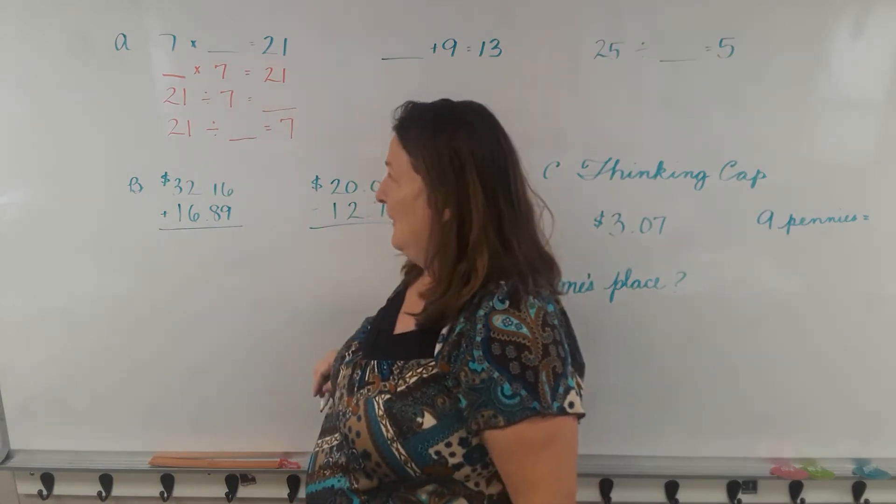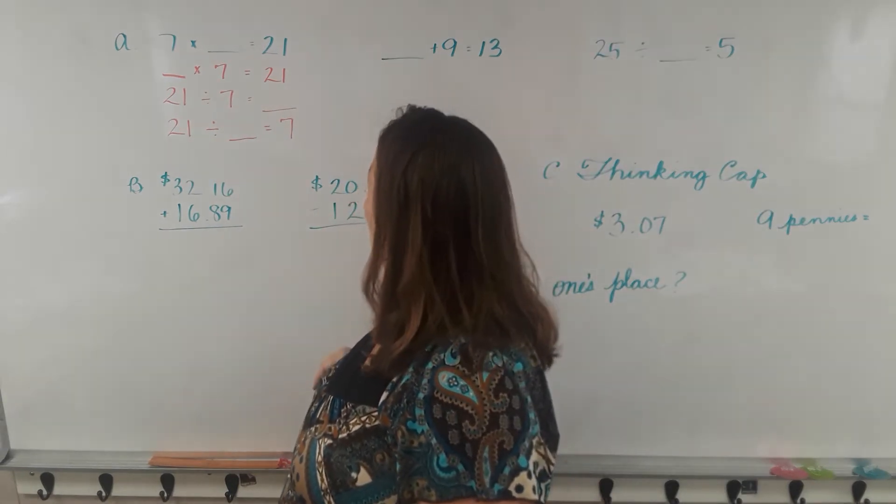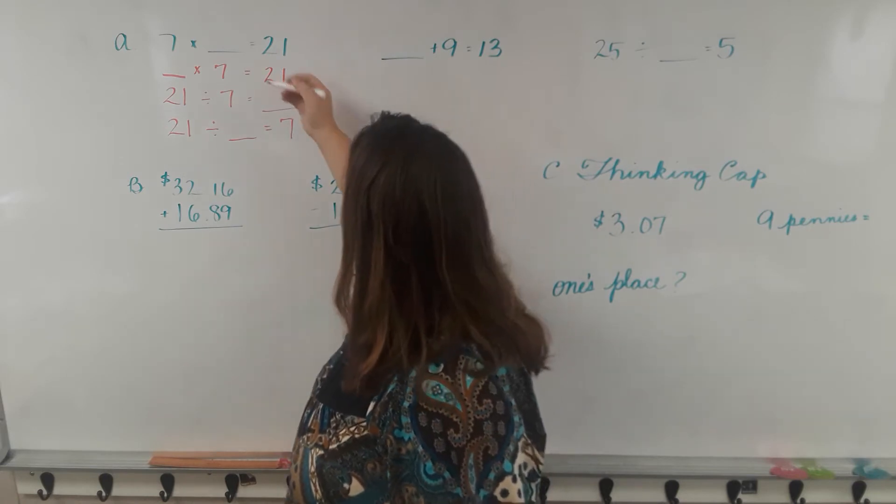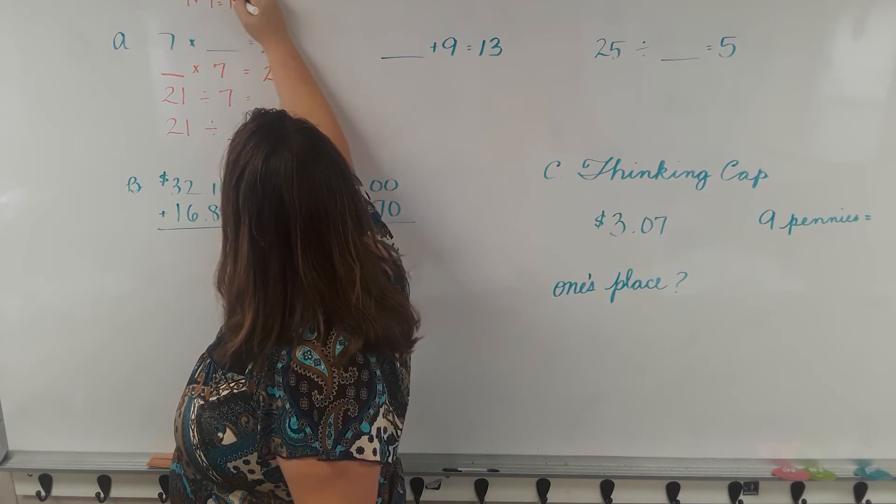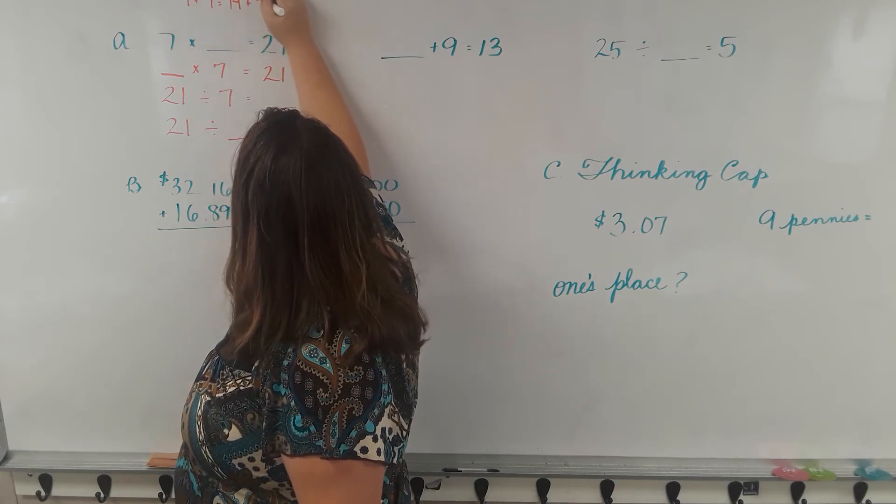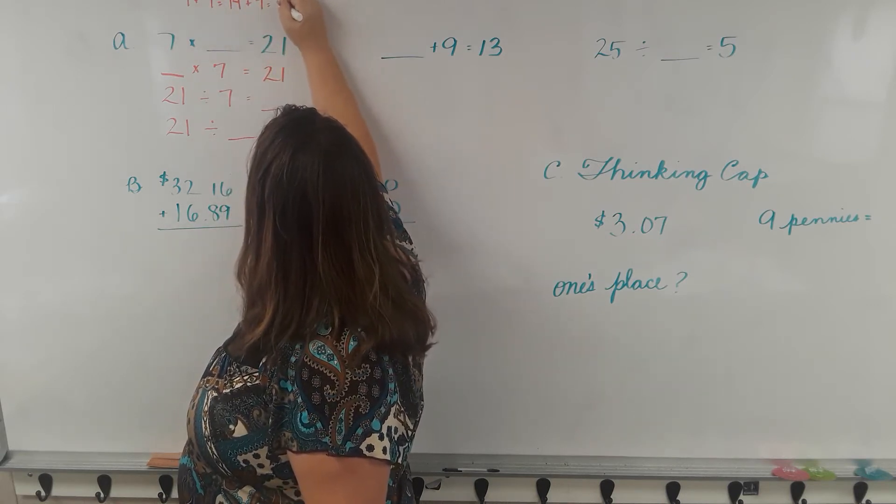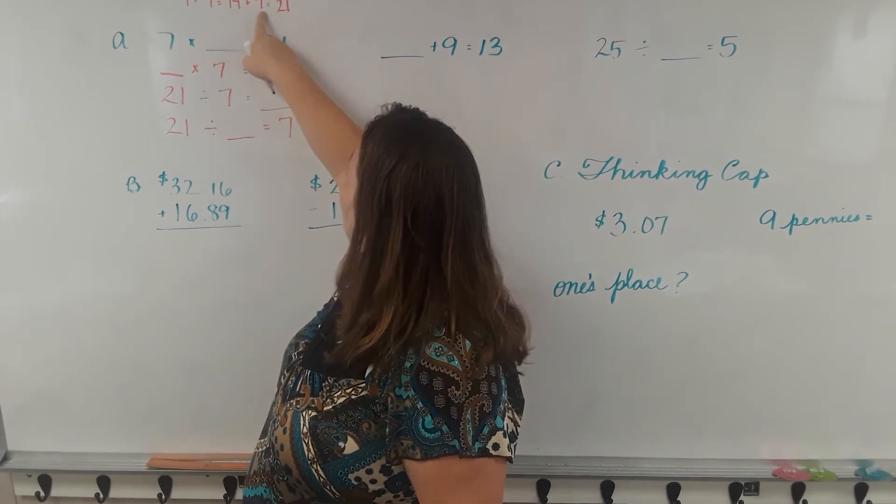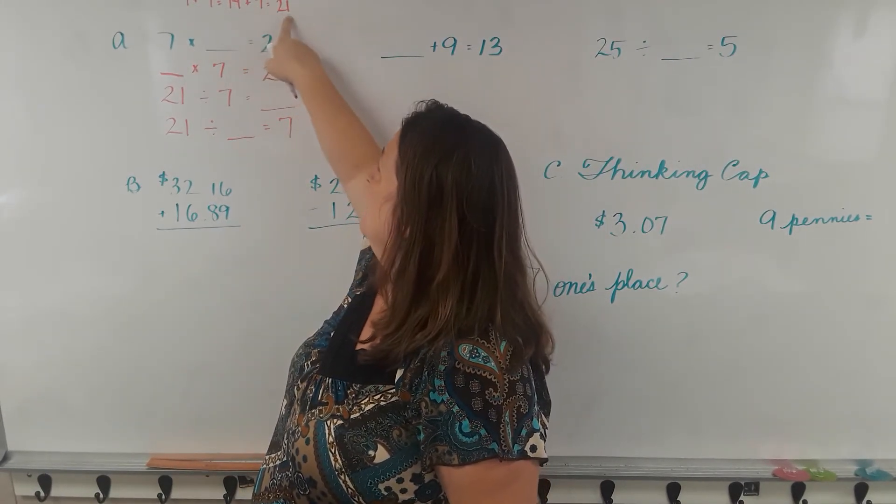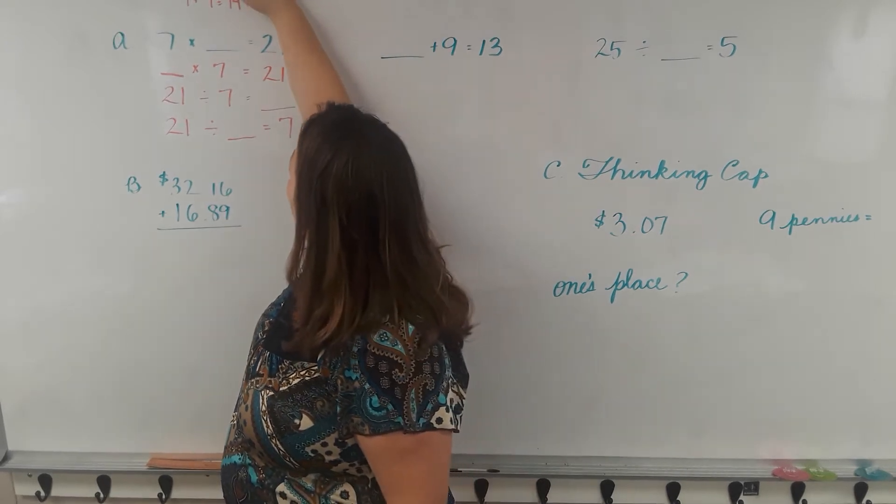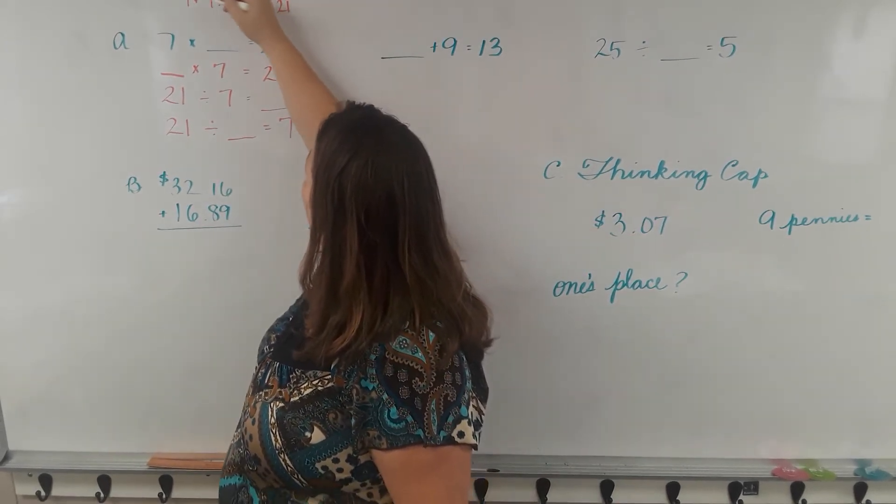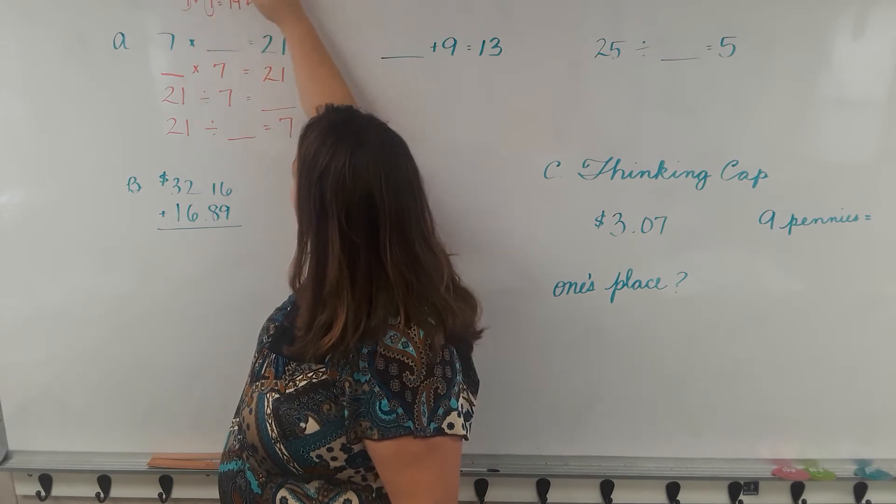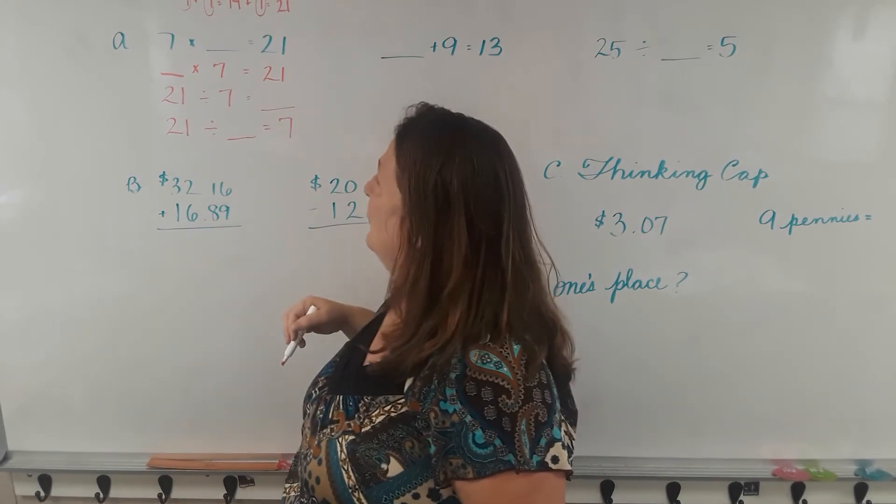So we can count by 7. It's not so easy but we can do it. 7 plus 7 equals 14, 14 plus 7 equals 21. 4 plus 7 is 11, so you put the one here, you put one here. 1 plus 1 is 2, 21. So we got to 21, how many groups of 7 do we need? 1, 2, 3 groups of 7.